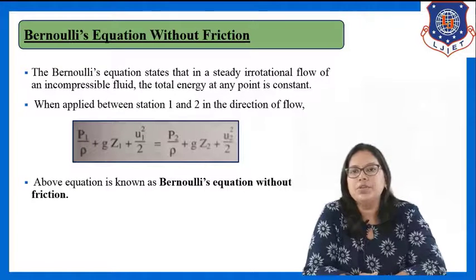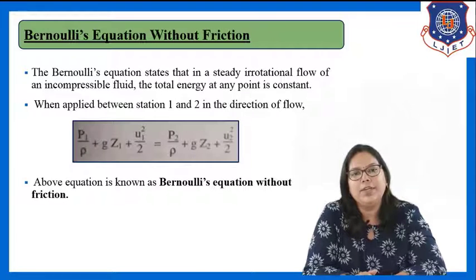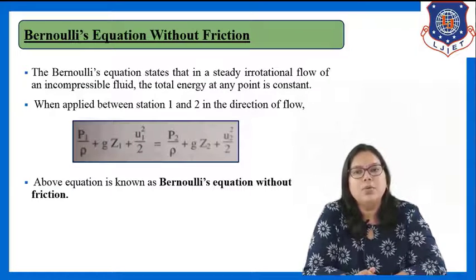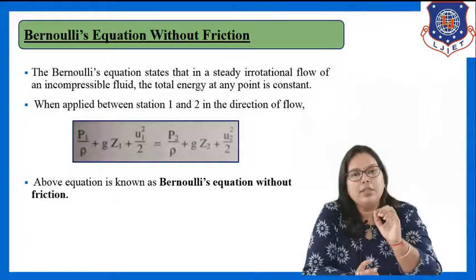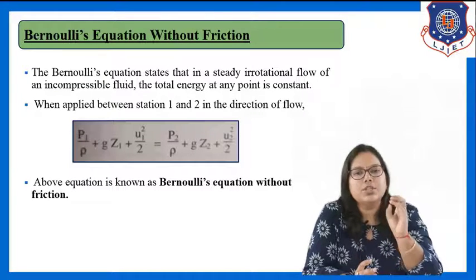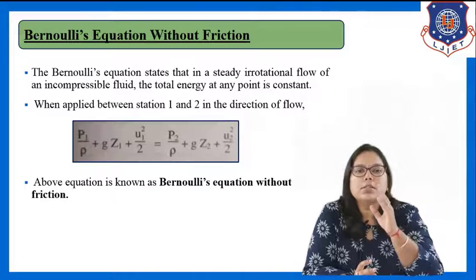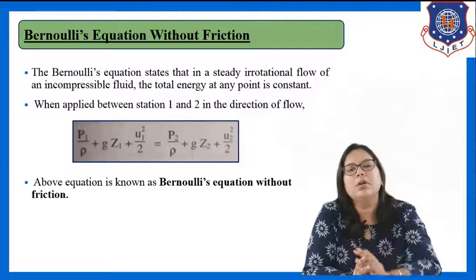In case of Bernoulli's equation without friction, Bernoulli's equation states that in a steady rotational flow of an incompressible fluid, the total energy at any point is constant. We have derived the equation: p/ρ + gz + u²/2 = constant. That means the summation of pressure energy, potential energy, and kinetic energy — the total energy at any point in the flow system is constant.